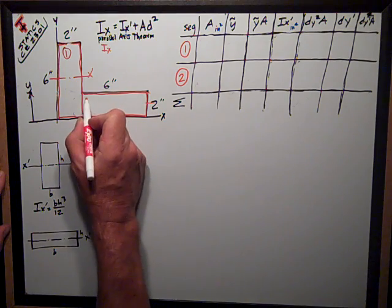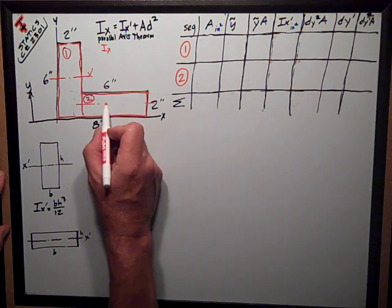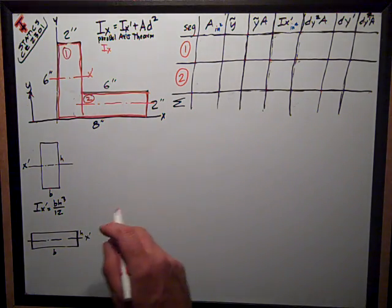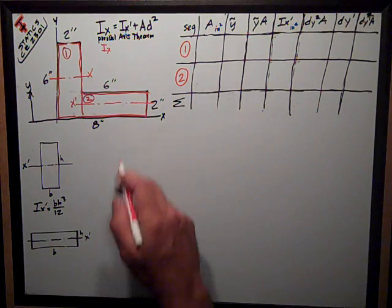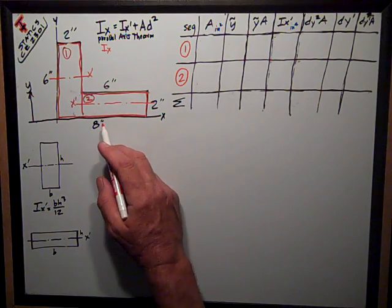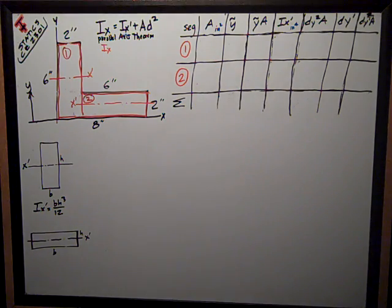Similarly, I'm going to call this rectangle 2, and here is this little line running through its centroid in the x direction, its own centroidal x prime axis is what I call that. This is just like what we've been doing, except we're going to extend it further.